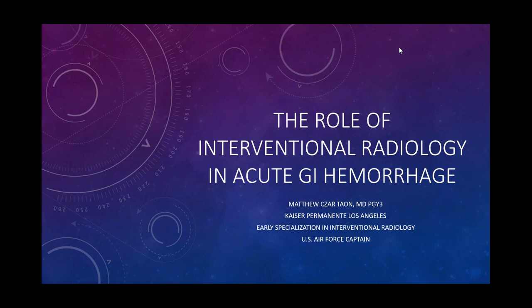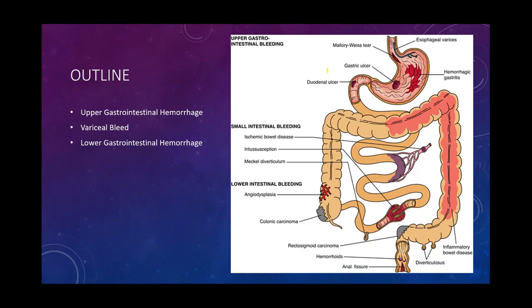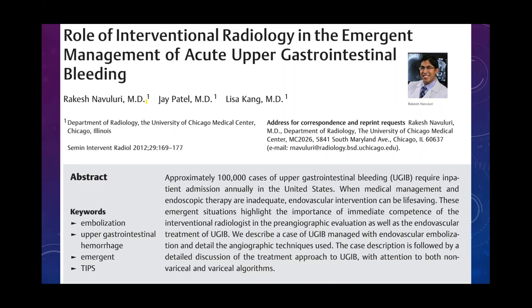Thank you, Dr. Ranade and Dr. Bishai. My name is Matthew Teyon, the ESIR resident at Kaiser Permanente Los Angeles. I'm here to talk about the role of IR in acute GI hemorrhage. As a basic outline, we'll discuss upper GI hemorrhage — mostly arterial — and variceal bleeds from a venous source, then lower GI hemorrhage, also mostly arterial. Bleeding from the esophagus, stomach, duodenum, and up to the ligament of Treitz characterizes upper GI hemorrhage; everything distal is lower GI.